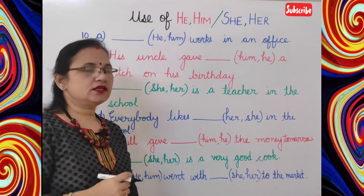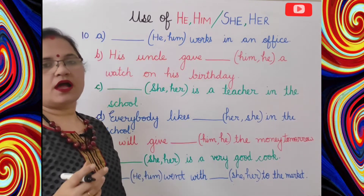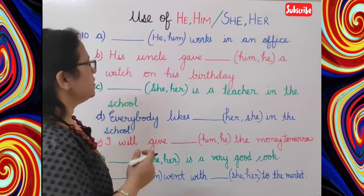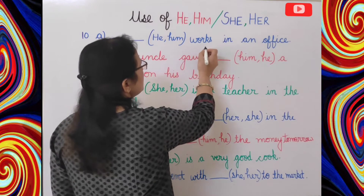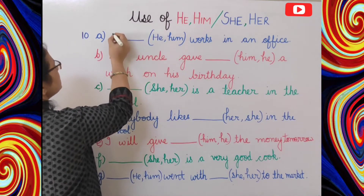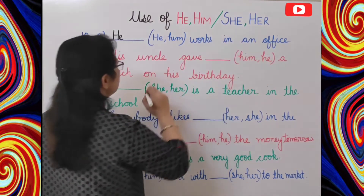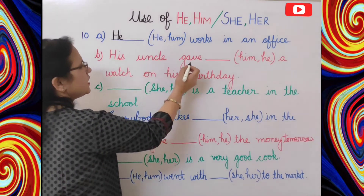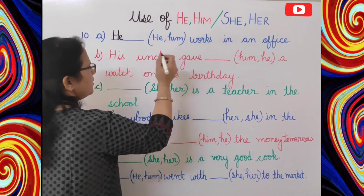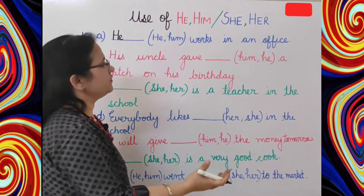Now students let's do this exercise to clear this topic. Fill in the blanks are given — you have to fill a suitable pronoun in the blanks. First: dash — he or him — works in an office. Here, before the verb the blank is there, so the answer is 'he': he works in an office. Next: his uncle gave — him or he — a watch on his birthday. The verb is 'gave' and the blank is after the action word, so the answer is 'him'.